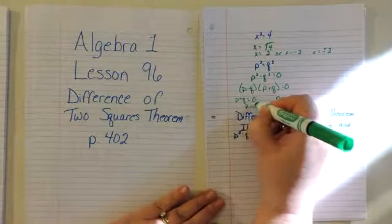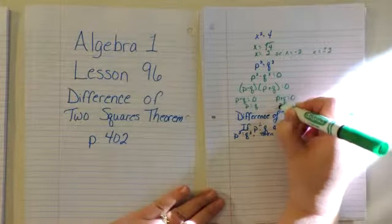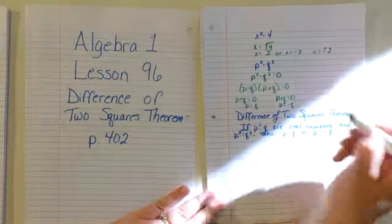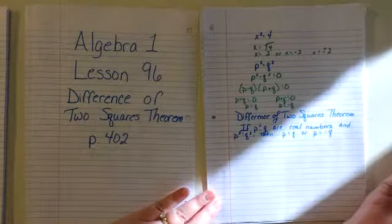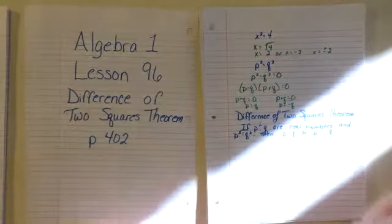So p equals positive q or p equals negative q. We use the zero factor theorem here.